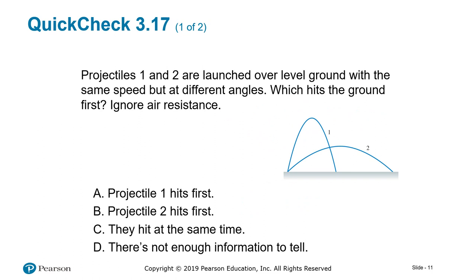The question: projectiles one and two are launched over level ground with the same speed but at different angles. Which hits the ground first? Ignore air resistance. If you said 2, then you're correct, because that is the max angle that will give you the furthest distance. It doesn't have to go up as high and then stop and slow down. This keeps almost a consistent speed throughout and it goes further.